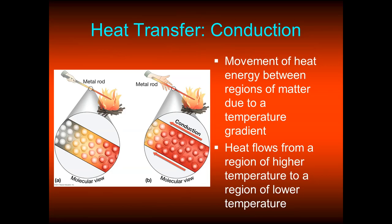Heat transfer occurs through a couple of processes. Conduction is the movement of heat in an object due to a temperature gradient — heat flows from a region of high temperature to a region of low temperature. Imagine a metal rod stuck into a fire: the end in the fire heats up, and heat slowly conducts up the rod toward the cooler end. If you hold the rod long enough, the heat will eventually move all the way up and burn your hand. Metals are great conductors of both heat and electricity.